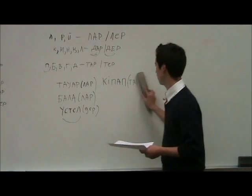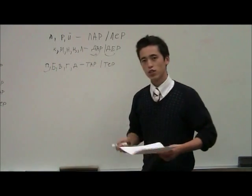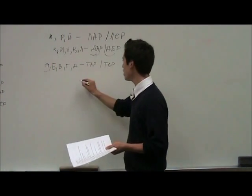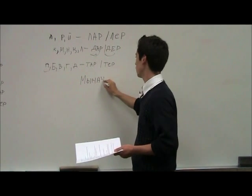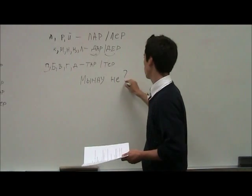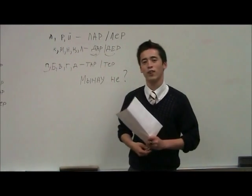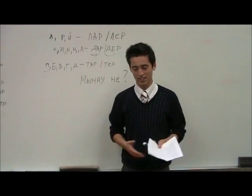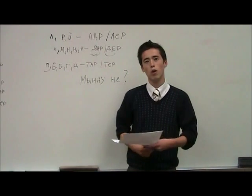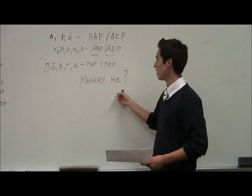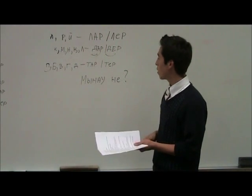Let's give some examples. Say I ask, what is this? 'Manau nia'. Like little kids usually like to ask, especially in Kazakh — manau nia, manau nia. What's this? Manau is 'this' and nia is like 'what'. We learned this question before. So manau nia.